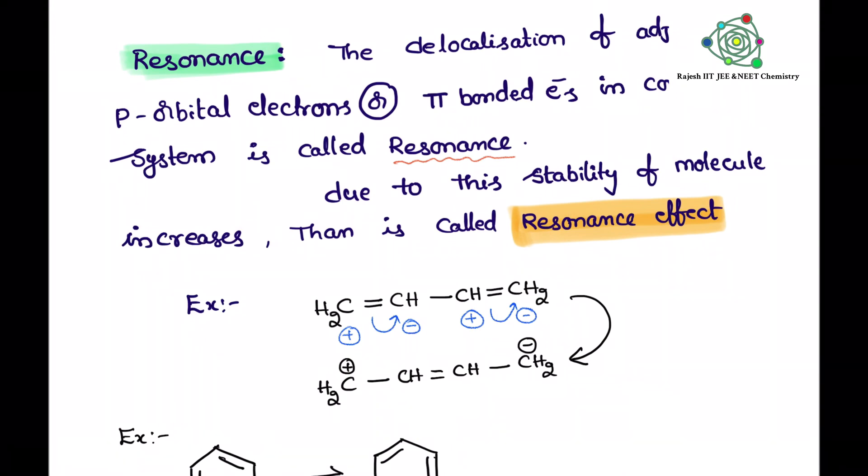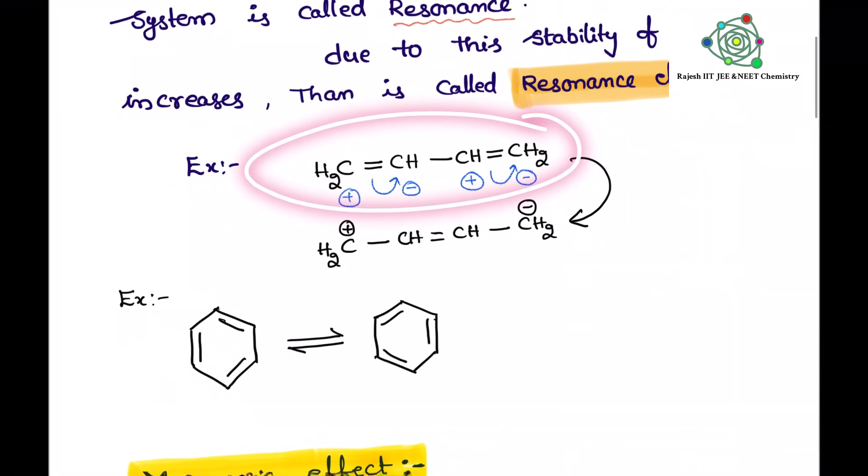Now coming to benzene. Here you see, benzene pi electrons are there, thus pi electrons are delocalized, so they keep on moving either from left to right or right to left. Here there is no restriction in the movement of pi electrons. Is it clear? Right, pi bonded electrons.